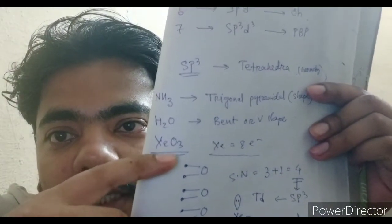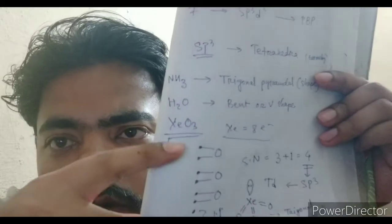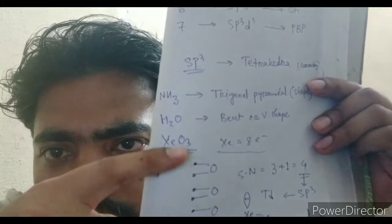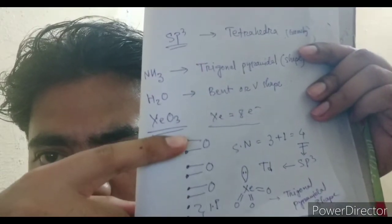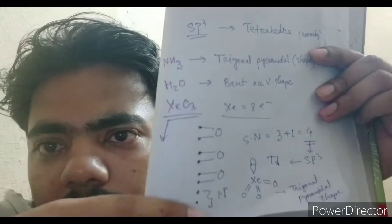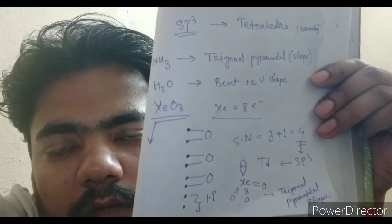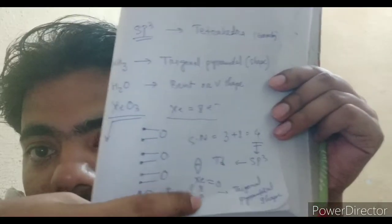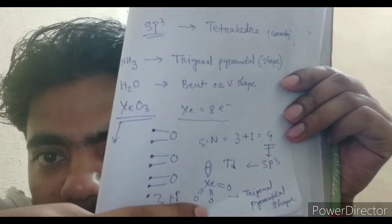At the end, I am giving one more example: XeO3, xenon trioxide. What is the hybridization, geometry, and shape? Xenon is the central atom and it has eight valence electrons. Six electrons make two bonds each with the three oxygens — oxygen is divalent, making two bonds: one sigma and one pi — but we only count sigma bonds. So three sigma bonds plus one lone pair gives a steric number of four. It is sp3 hybridization, tetrahedral geometry, and since there is one lone pair, the shape is trigonal pyramidal.